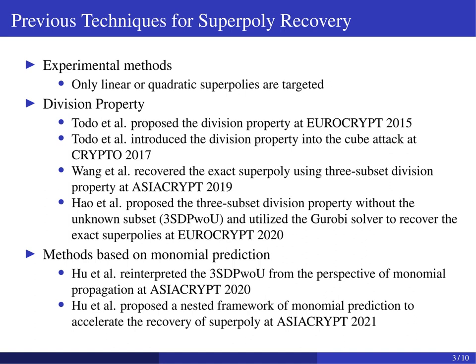In the early stage of the cube attack, only linear or quadratic superpolys are targeted. Later, thanks to the introduction of the division property and the MRP modeling method, even complex superpolys can be recovered practically. The division property can also be revisited from an algebraic perspective, leading to the so-called monomial prediction technique. At AsiaCraft 2021, Hu et al. proposed a framework called nested monomial predictions by combining the divide-and-conquer strategy with the monomial prediction technique.